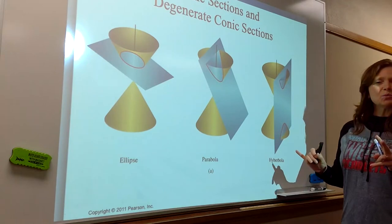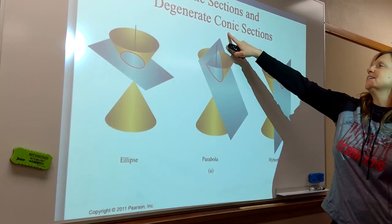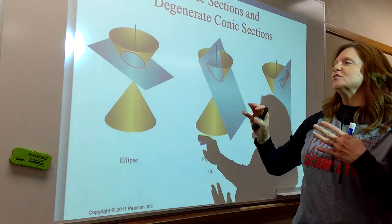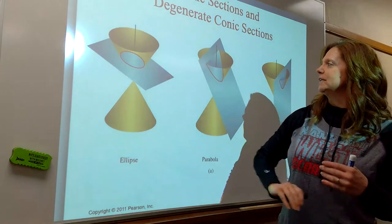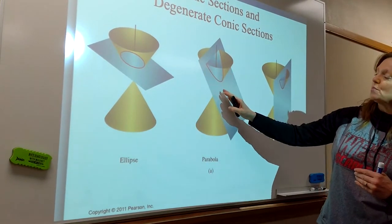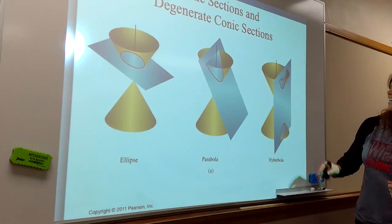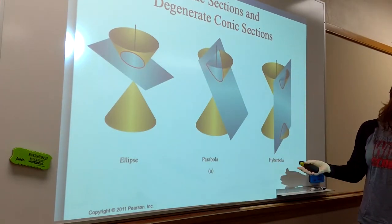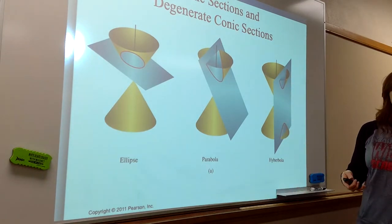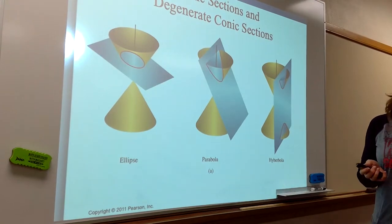You've done work with this in algebra two, or you should have. They're called conic sections because they're formed by cutting a cone in different ways. If you slice it at an angle, you get an ellipse. If you change your angle a little bit more vertical, you can get a parabola, and in more of a vertical way you're going to get two curves — a hyperbola. So those are the three: ellipse, parabola, and hyperbola.